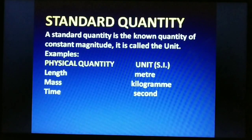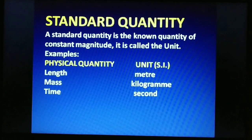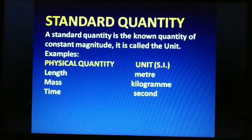A standard quantity is a known quantity of constant magnitude; it is called the unit. For example, the unit of length is metre, mass is kilogram, and time is second.